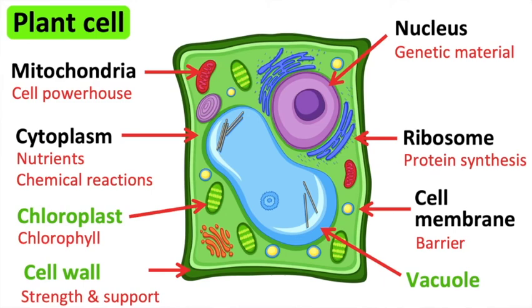Now we have learnt the basic structure of plant cells. It's important to remember that not all plant cells look the same. The reason for this is because plant cells are specialised for their functions.